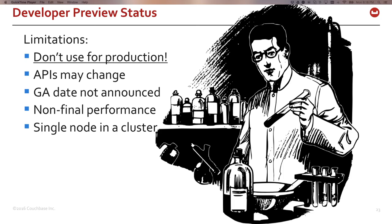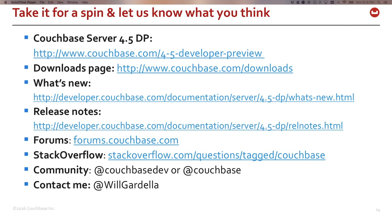It's in developer preview right now, so there are some limitations you should know. Don't use it for production. The APIs may change, as might other things. The GA date is not announced or guaranteed. The performance is not final, and it's limited to a single node in a cluster right now. Take it for a spin though and let us know what you think.